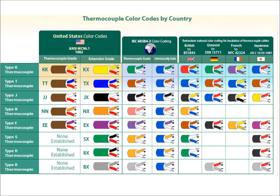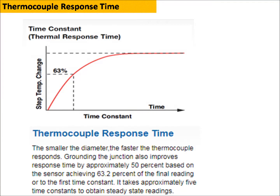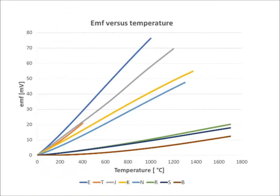Thermocouple color codes differ from country to country. The time constant is defined as when the sensor achieves 63.2% of the final reading. A smaller time constant means a better response from the thermocouple. An EMF versus temperature curve is available for different types of thermocouple.